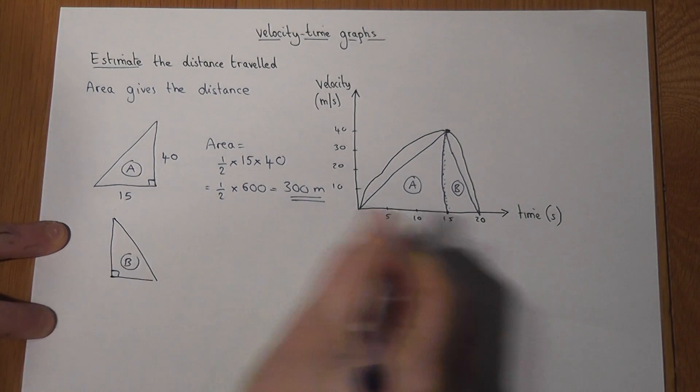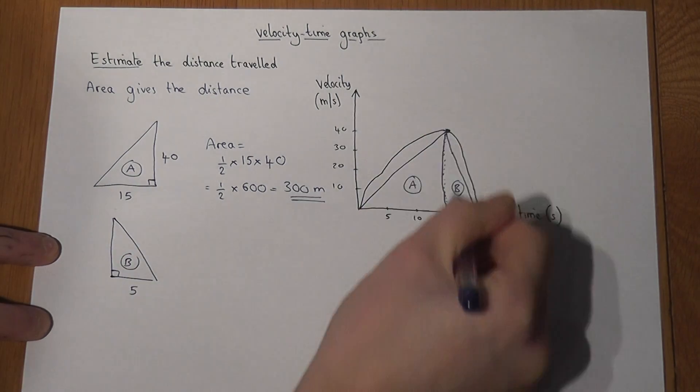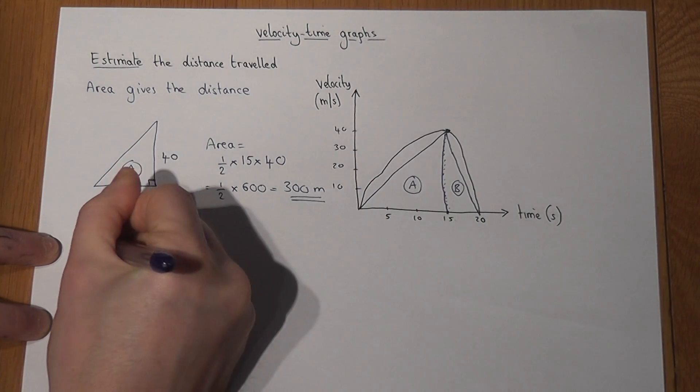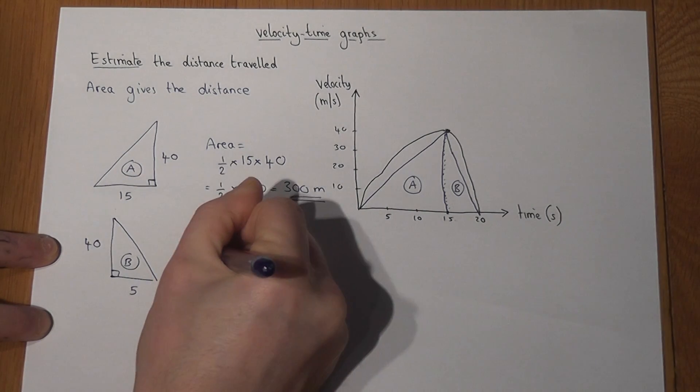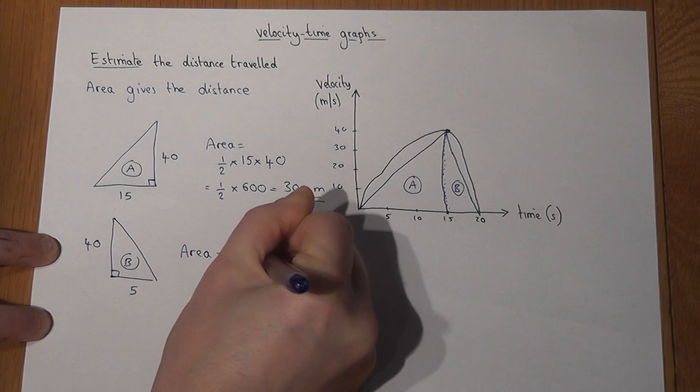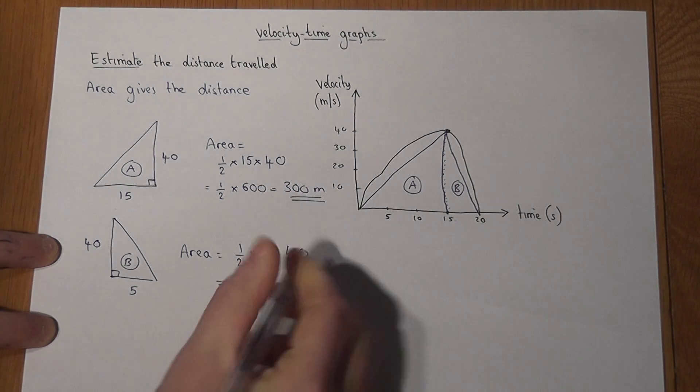Triangle B has only got a base of 5 but it's got a height of 40 as well. To find its area we do a half times base times height.